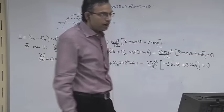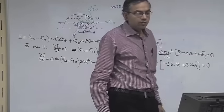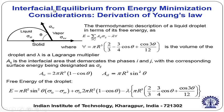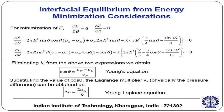In the previous lecture, we were discussing about interfacial equilibrium from energy minimization considerations. To briefly recapitulate, we considered a droplet which is a part of a spherical shape. We wrote the total energy as the sum of the interfacial energy and minimized it by constraining the total volume of the droplet, where lambda is the Lagrange multiplier. We derived expressions for the volume, liquid-vapor interfacial area, and solid-liquid interfacial area.